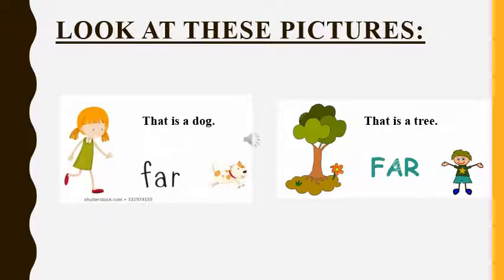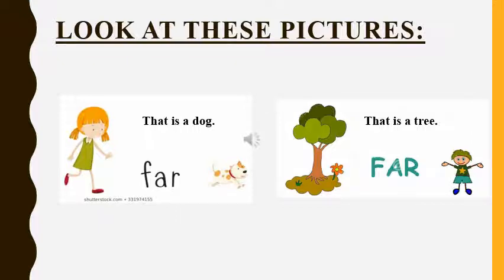Look at these pictures. The girl in the first picture is very far from the dog. So she will use the word 'that' to show the dog. She will say, that is a dog. In the second picture, the boy is standing very far from the tree. So he will use the word 'that'. He will say, that is a tree. We use the word 'that' with singular nouns. We use 'that' when we talk about a thing or a person standing or placed very far from us.